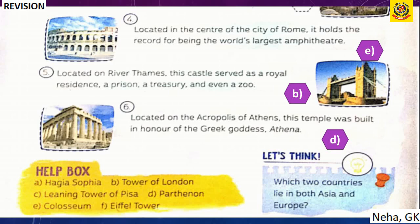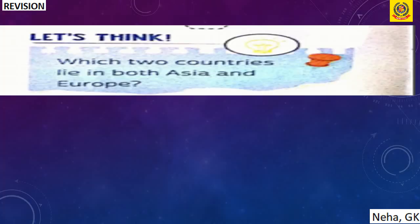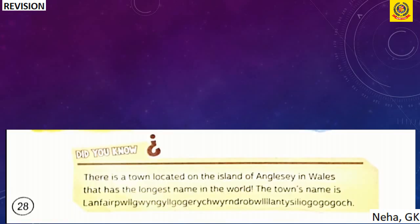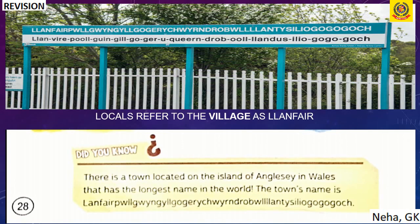Two countries that lie in both Asia and Europe are Russia and Turkey. Did You Know: there is a town on the island of Anglesey in Wales with the longest name in the world — almost 58 letters long — locally referred to as Llanfair.